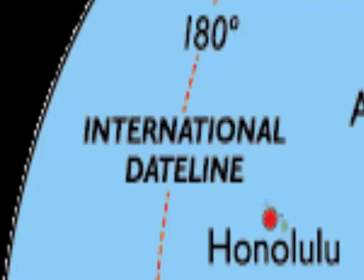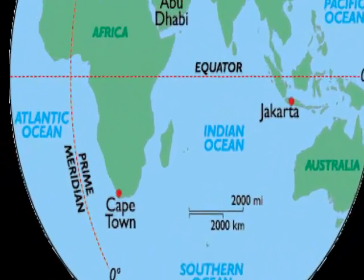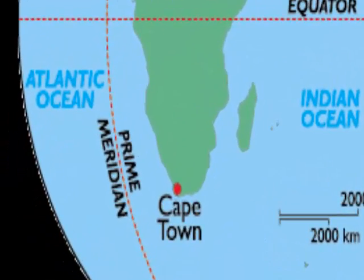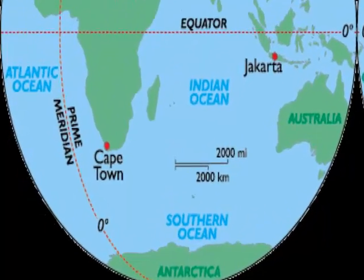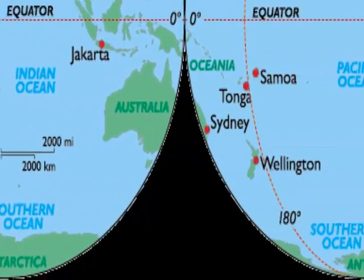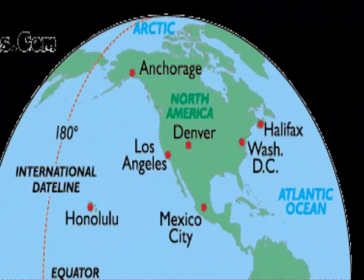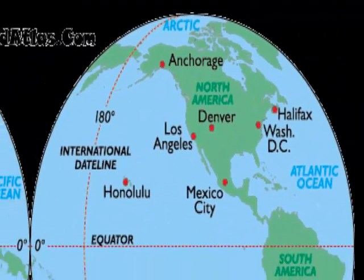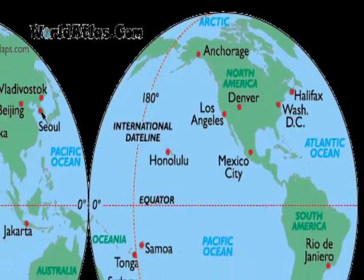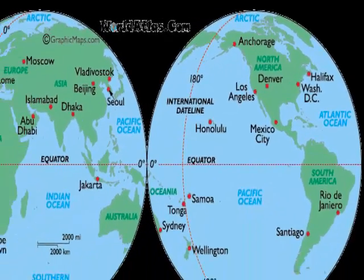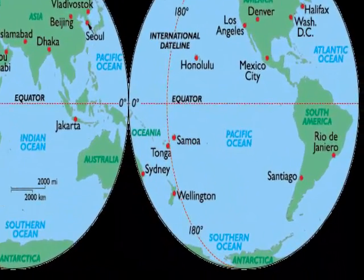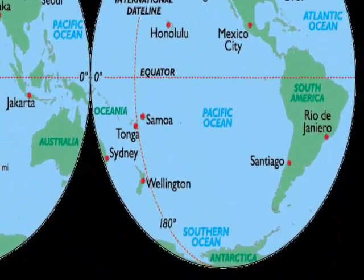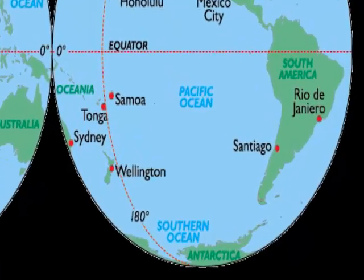The Prime Meridian is a line that runs from the North to the South Pole at 0 degrees. The International Date Line, on the other hand, is a line that runs from the North to the South Pole in the opposite direction of the Prime Meridian.